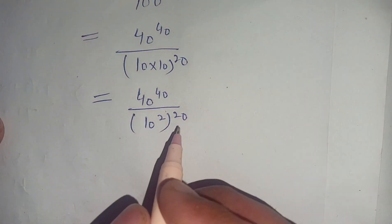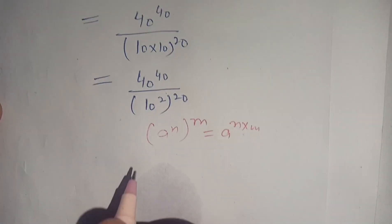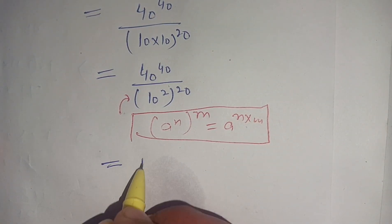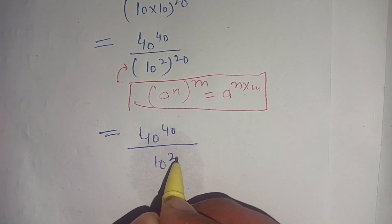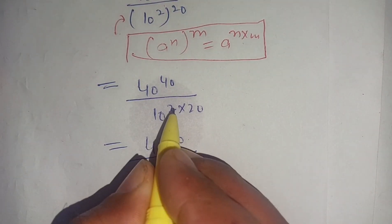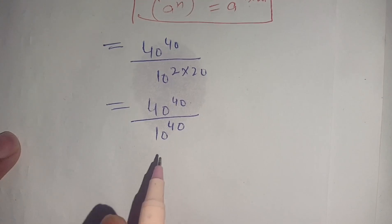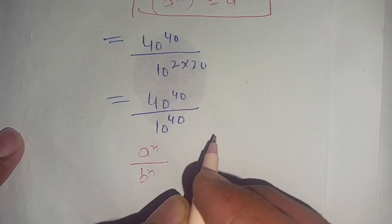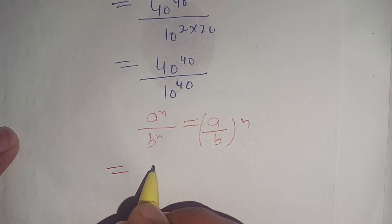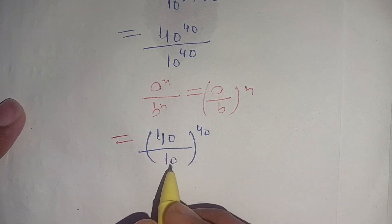We can write 10 times 10 as 10 squared, so the denominator becomes (10 squared) to the power 20. Using the identity (a^n)^m = a^(n×m), the denominator becomes 10 to the power 40. We then apply the identity a^n divided by b^n equals (a divided by b)^n, giving us (40 divided by 10) to the power 40.